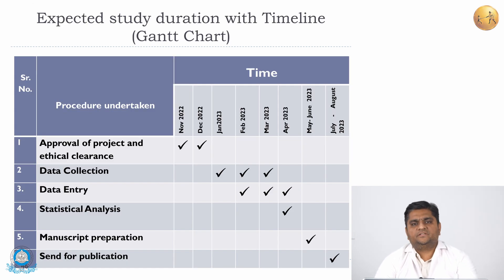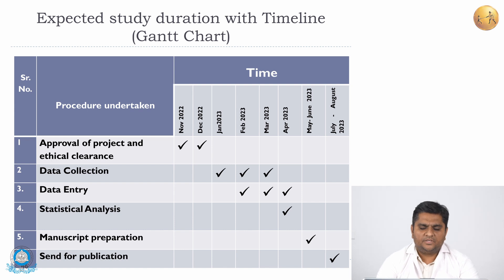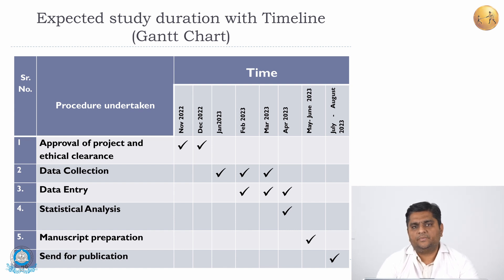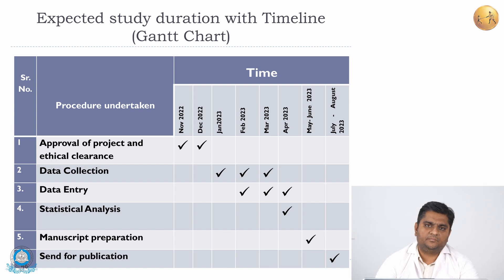You need to mention the Gantt chart or expected study duration with the timeline. Plan out when you will start, from obtaining the approval, to the data collection period, data entry time, statistical analysis period, manuscript preparation time, and finally when it will be sent for publication. This entire plan has to be ready before you start the study.